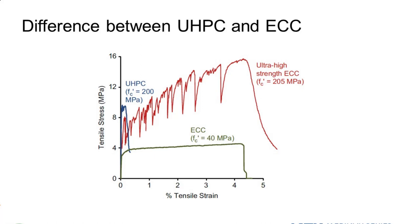HPFRCC typically refers to materials with very high compressive strength — 200 MPa or above. The blue curve shows that in tension, HPFRCC while having high compressive strength drops in load at about 0.1 to 0.2 percent strain. ECC, a commonly studied version, has a very large strain capacity of several percent. ECC may not have the high compressive strength — say 40 versus 200 MPa — but it is designed for high ductility in tension, not high compressive strength.